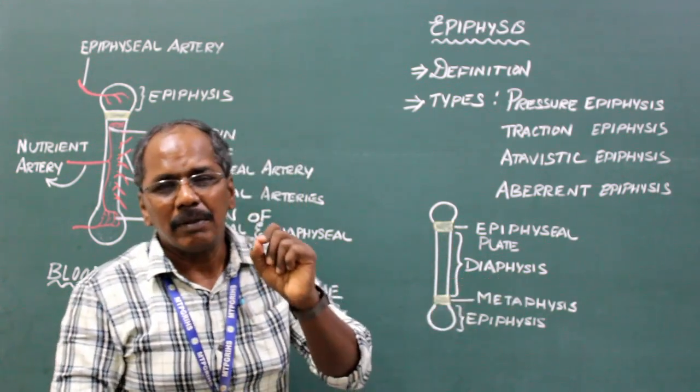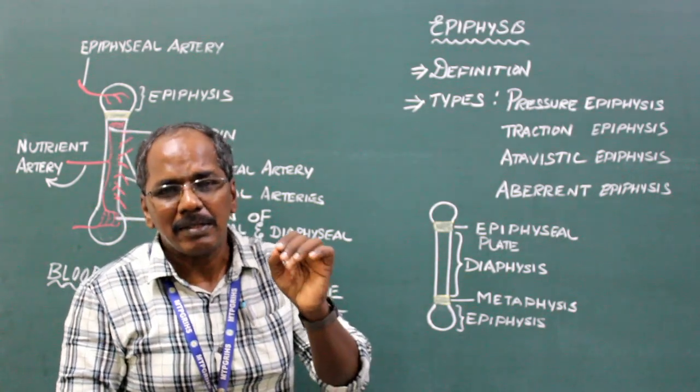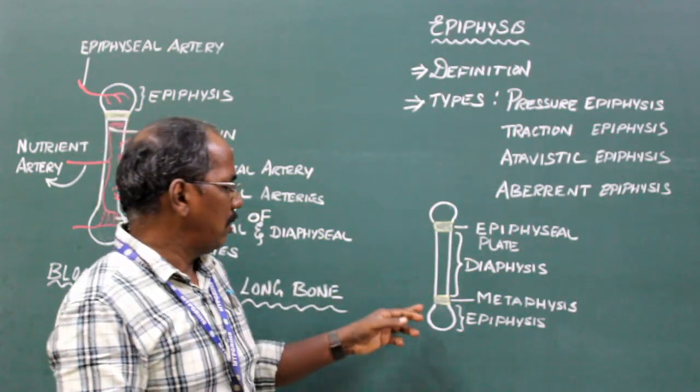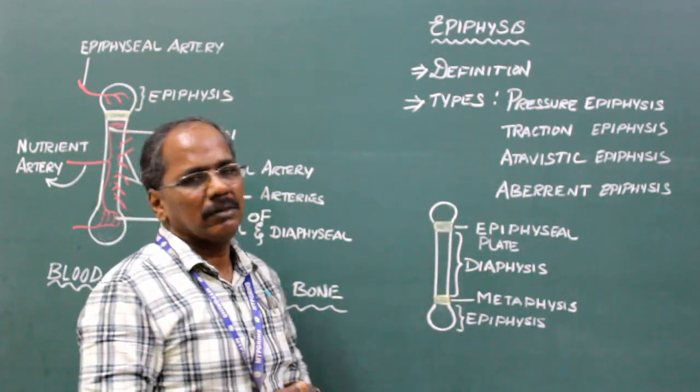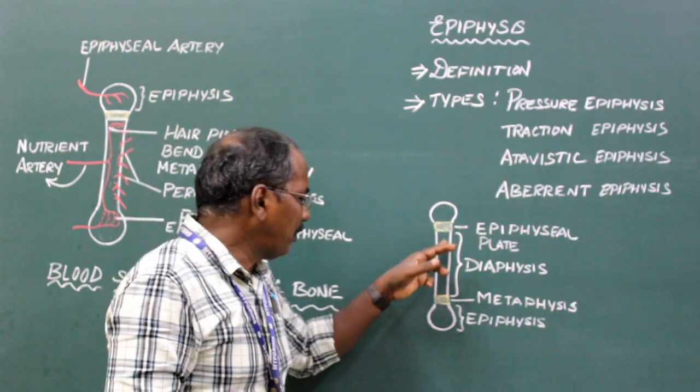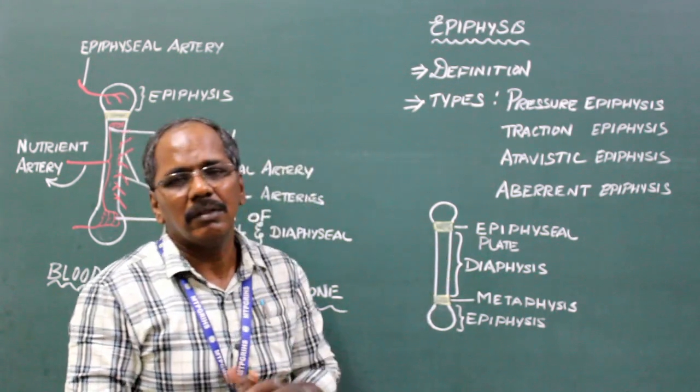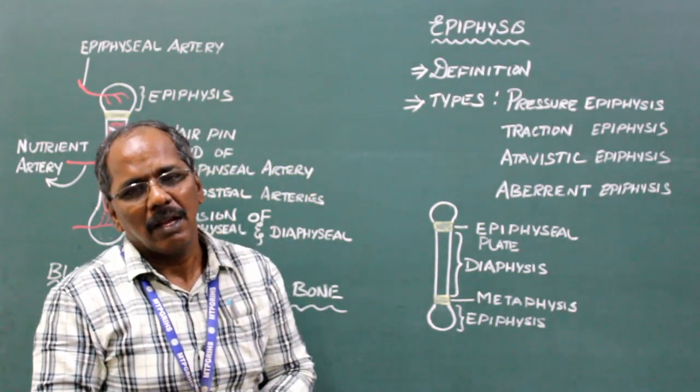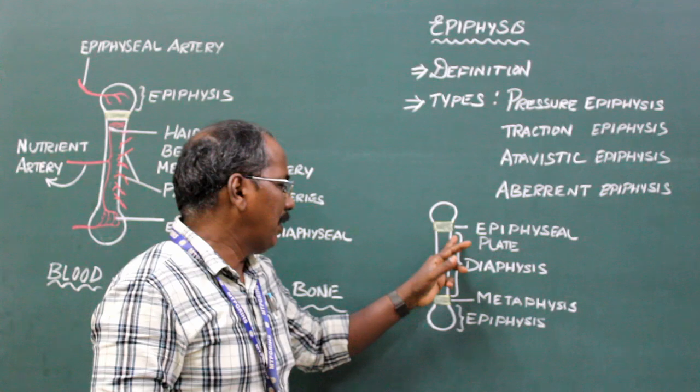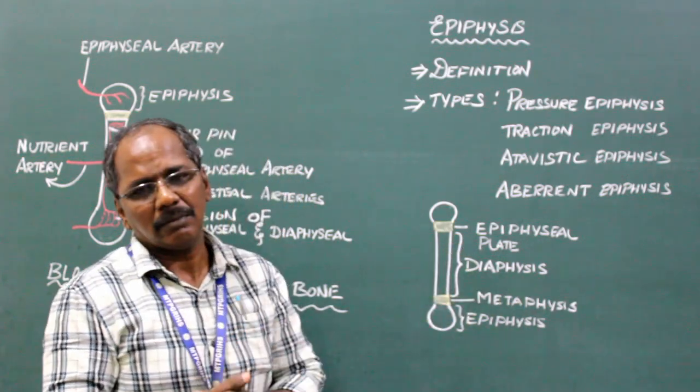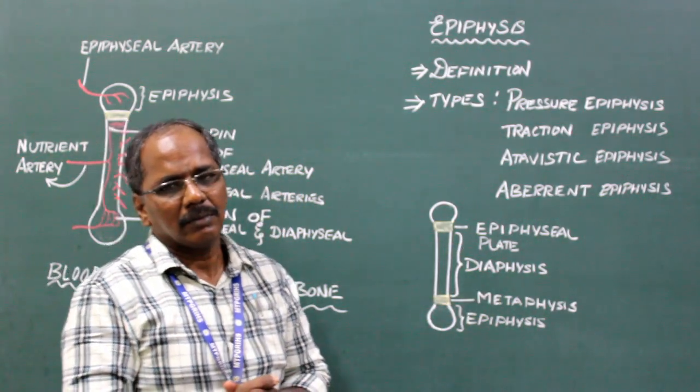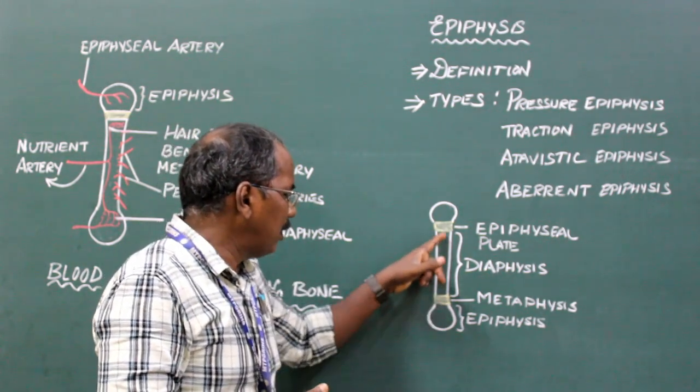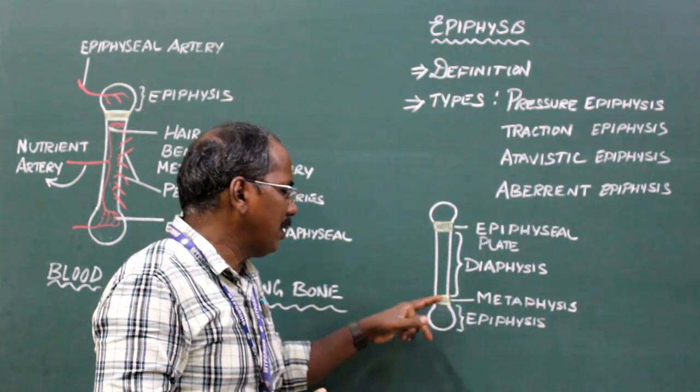The ends of the bone which ossify, i.e., develop from the secondary centers, are known as epiphysis. The shaft of a long bone which develops from the primary center is known as diaphysis. The epiphysial ends of the diaphysis are known as metaphysis.